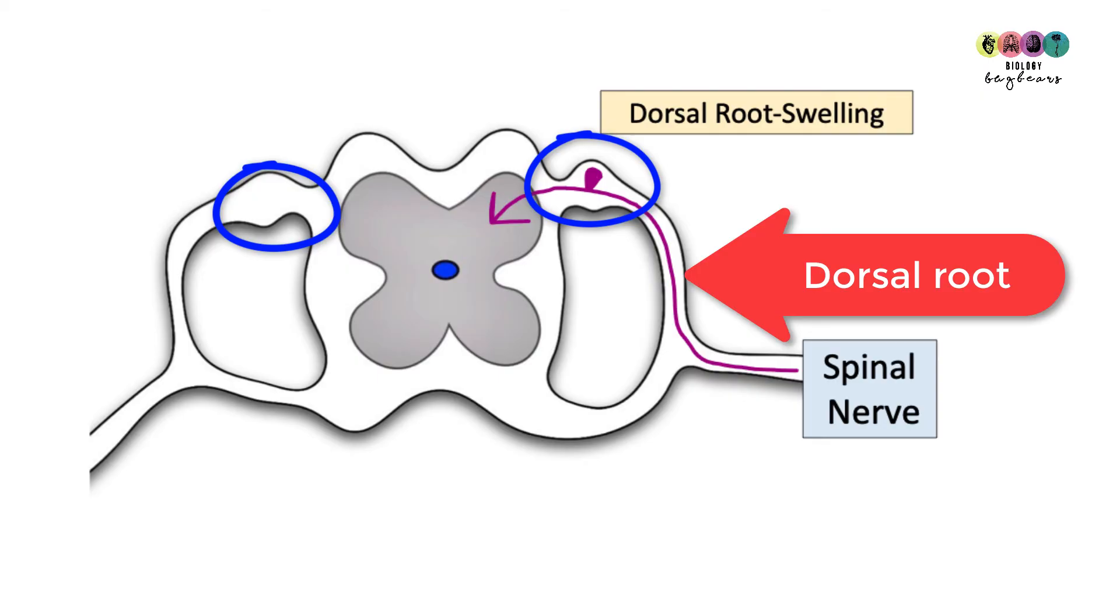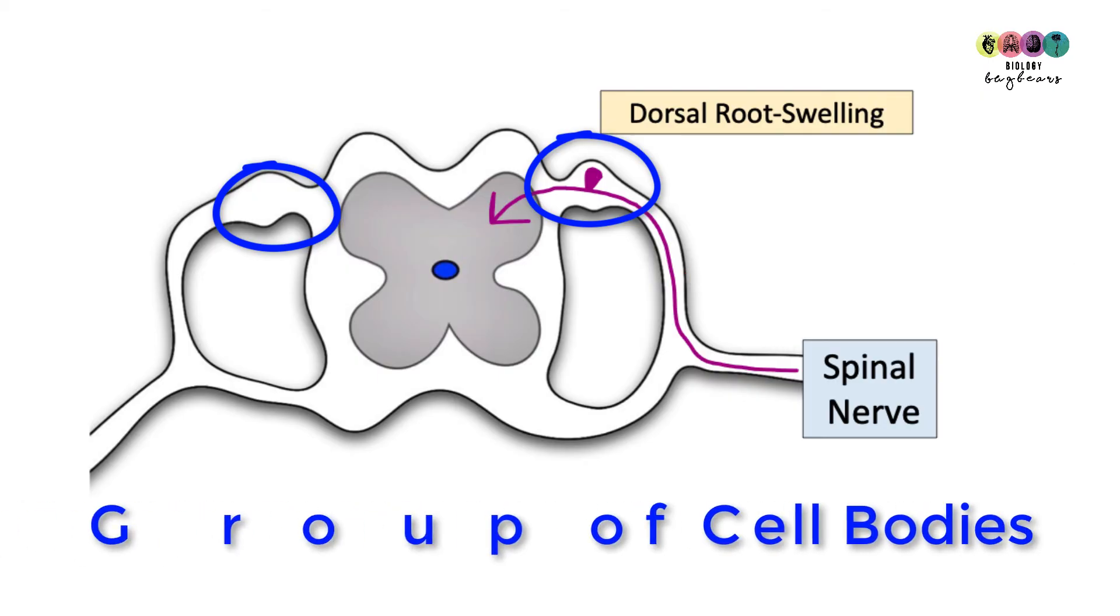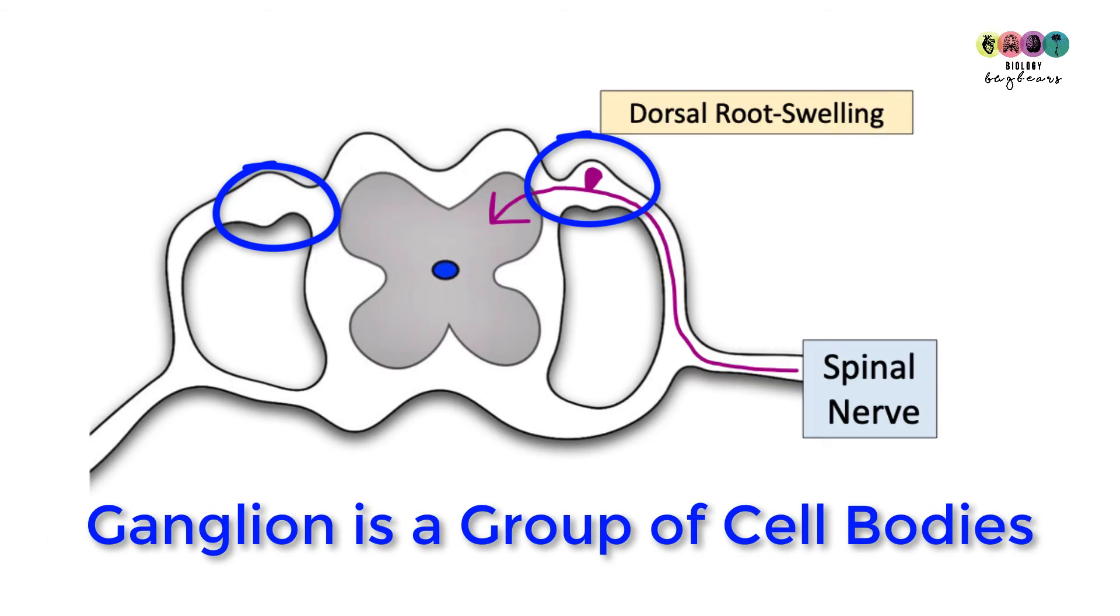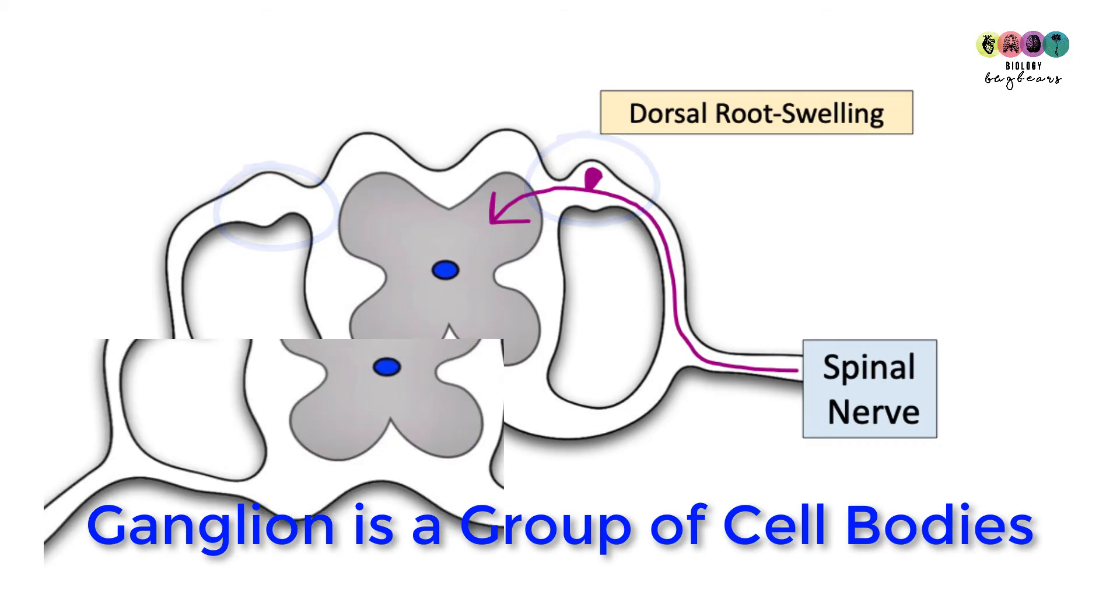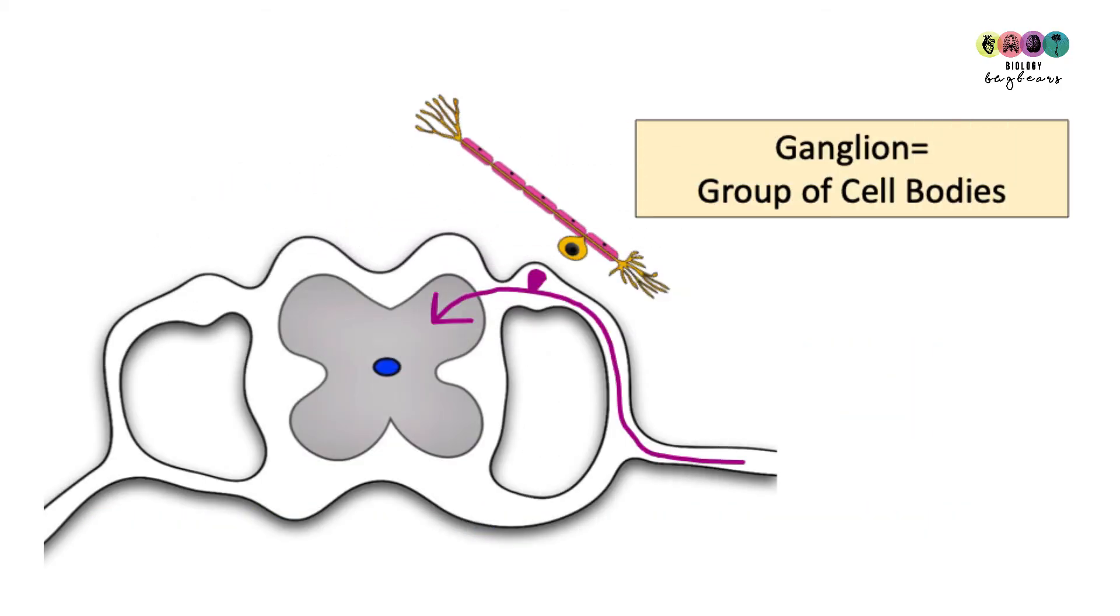Inside this swelling is the dorsal root ganglion. A ganglion is a group of cell bodies so it's going to be a collection of sensory neuron cell bodies in there. Here's a sensory neuron, you can see the cell body there. So inside this dorsal root swelling will be many cell bodies of sensory neurons.